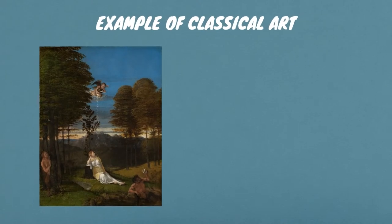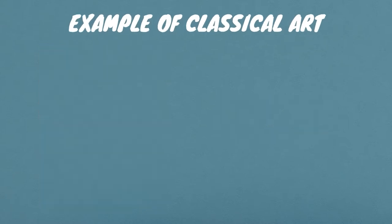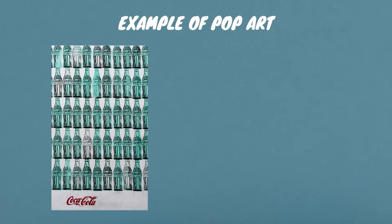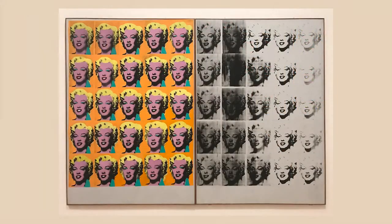Before pop art, there was what we call classical art. The art culture was completely disconnected from real life and real people. One of the things that made pop art so unique was the fact that it chose to focus on real and normal subjects. Primary colours like red, blue and yellow are frequently found in pop art. The colours are bright and similar to those found in a comic strip.